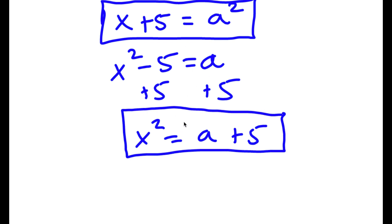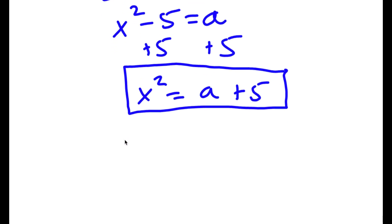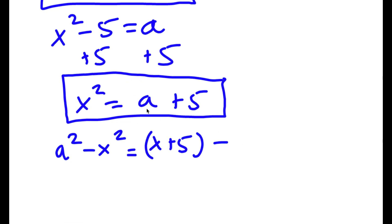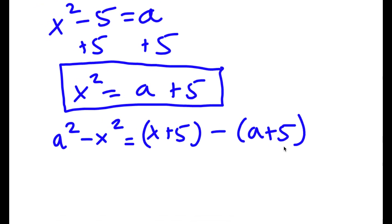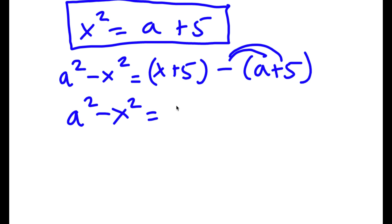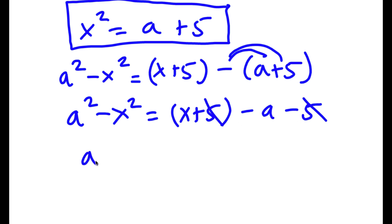So now I have my value of x squared and my value of a squared. If I find a squared minus x squared, this equals a squared, which is x plus 5, minus x squared, which is a plus 5. Distributing the negative sign, I get a squared minus x squared is equal to x plus 5 minus a minus 5. The 5s cancel, leaving a squared minus x squared is equal to x minus a.